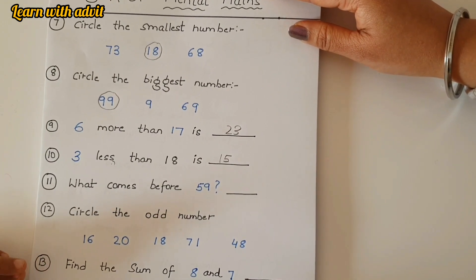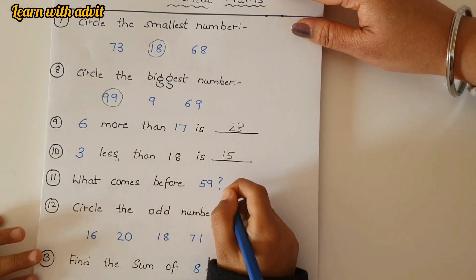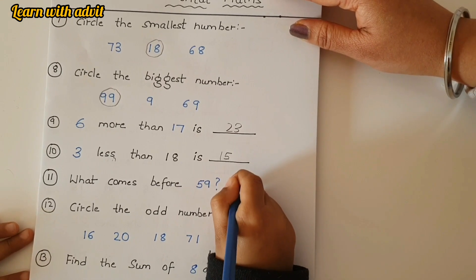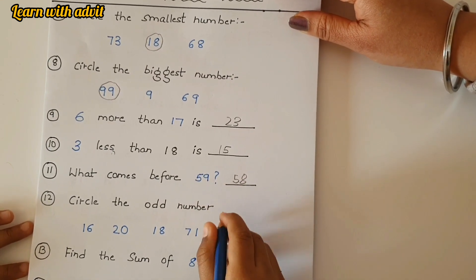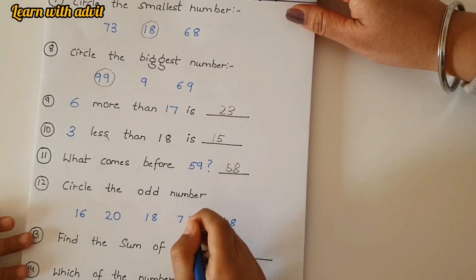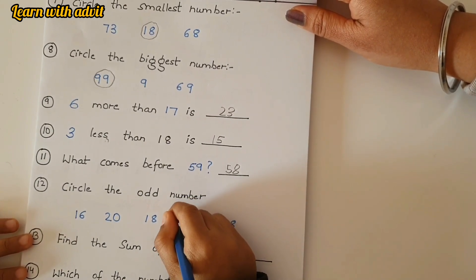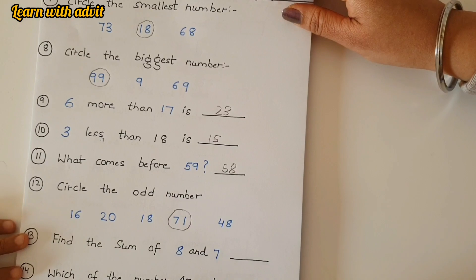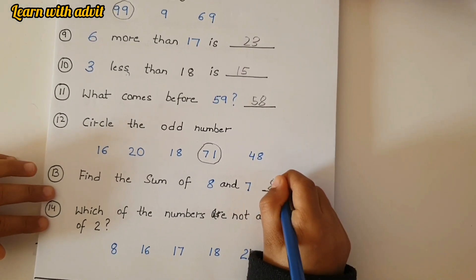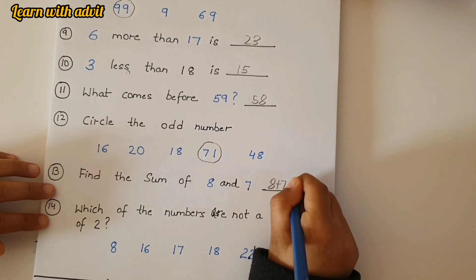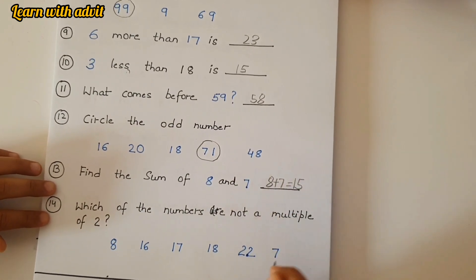What comes before 59? Before 59, 58. Yes. Circle the odd numbers. 17? There is only one, right? Yeah.